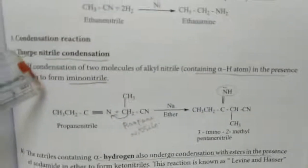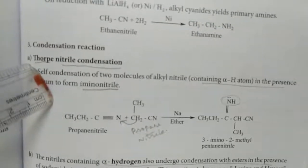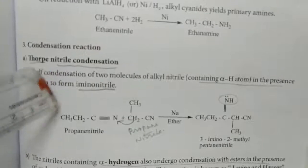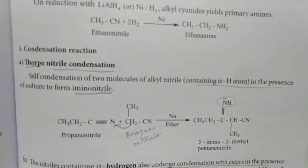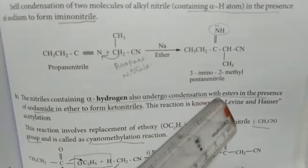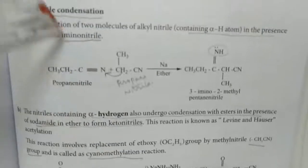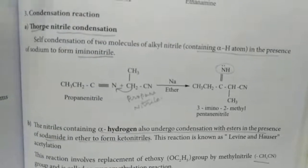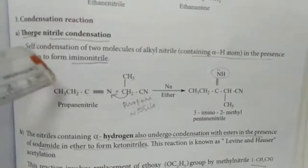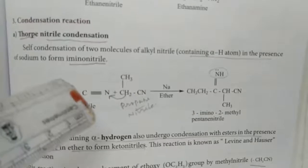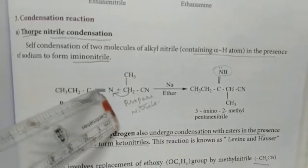The next reaction is a very important one — the condensation reaction. When propanenitrile undergoes a condensation reaction, the nitrile group structure is C triple-bonded to N.